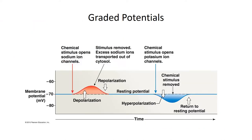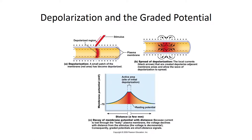The chemical stimulus opens sodium channels, and as sodium channels open, we go through a depolarization phase. During repolarization, sodium channels close and potassium channels open. Graded potentials differ from action potentials in that they show decremental conduction — the strength of the stimulus decays as it gets farther from the origin. Graded potentials can also travel in both directions, whereas action potentials only travel in one direction.